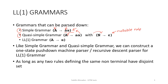Now we will be discussing LL1 grammar. LL1 grammar has this form. On the left-hand side, there is a single non-terminal, and on the right-hand side, it can be a combination of both terminal and non-terminal, which means you can have rules that look like this. You can also have rules where it starts with a non-terminal.